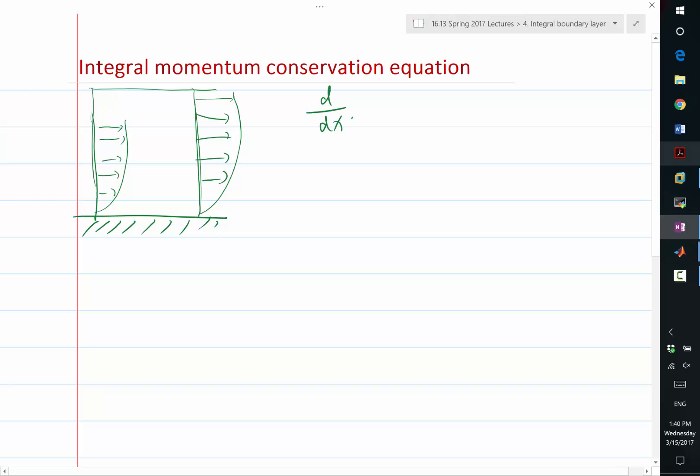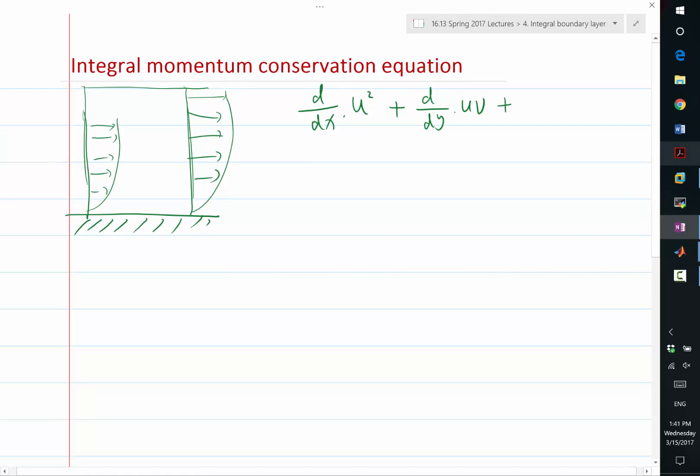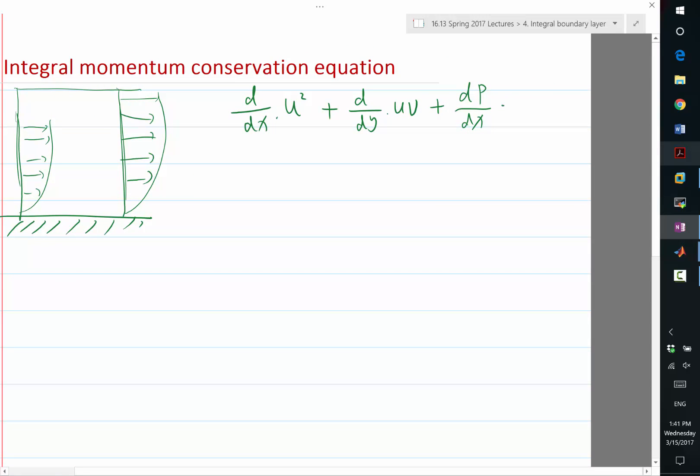So d dx of u square, that's the flux in the x-directional momentum, plus d dy of u times v. That's the momentum flux in the y-direction. Plus dp dx, it's equal to my viscosity times—oh, I should be using partial here because I'm considering a two-dimensional flow field—partial p partial x. Here we have partial square u partial y square.